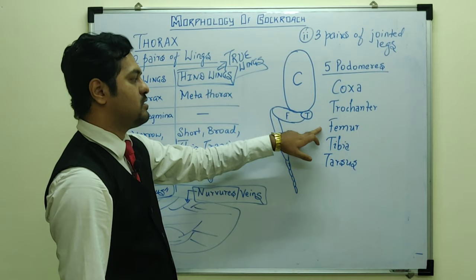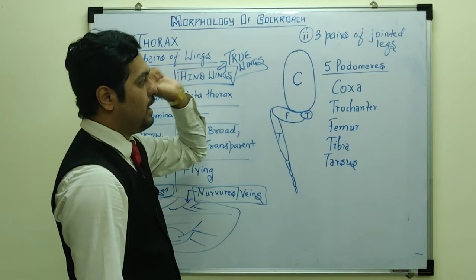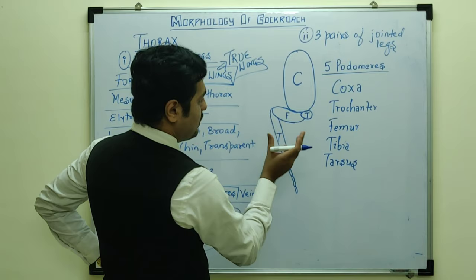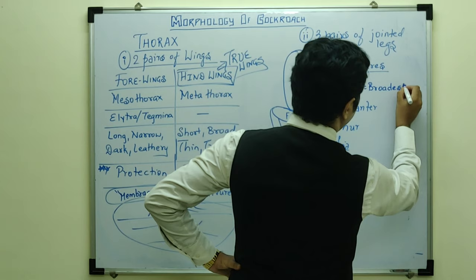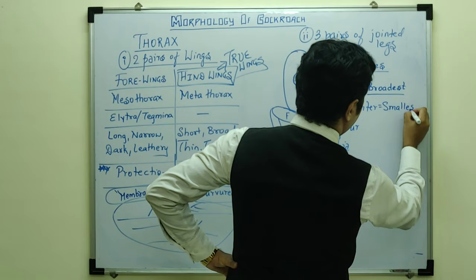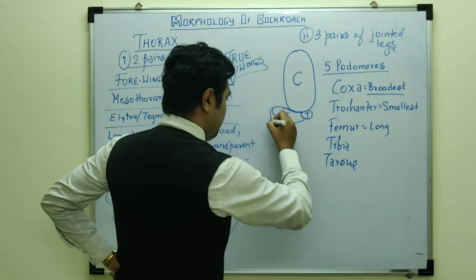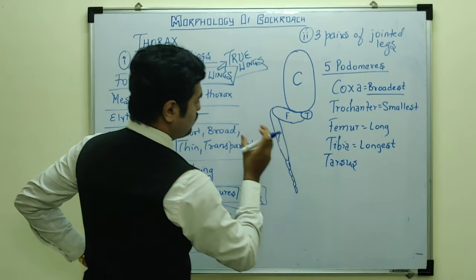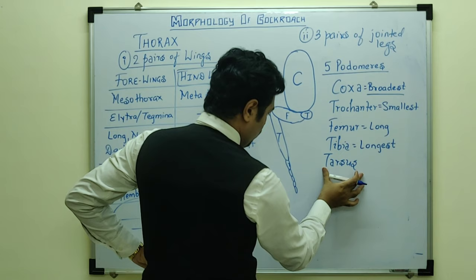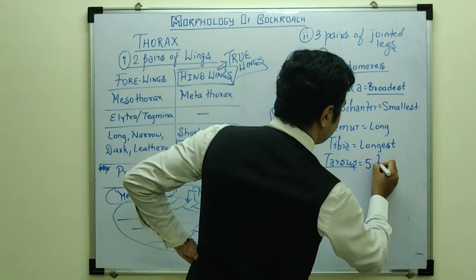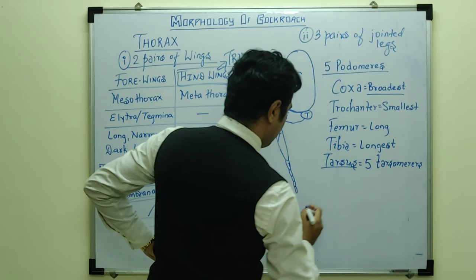In each leg, coxa is the broadest podomere. Trochanter is the smallest. Femur is a long podomere. Tibia is the longest podomere. Tarsus is the last podomere and has five segments called tarsomeres — first, second, third, fourth, and fifth tarsomere. The fifth tarsomere is also known as the pretarsus.